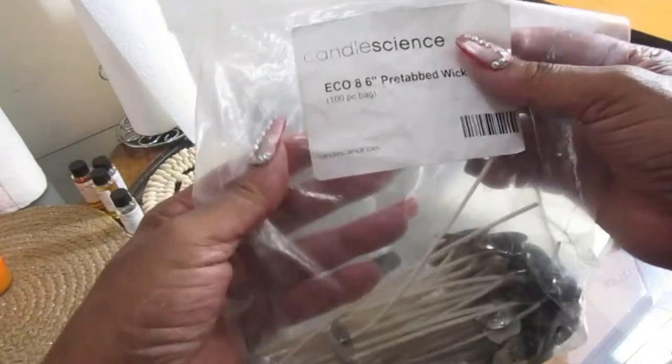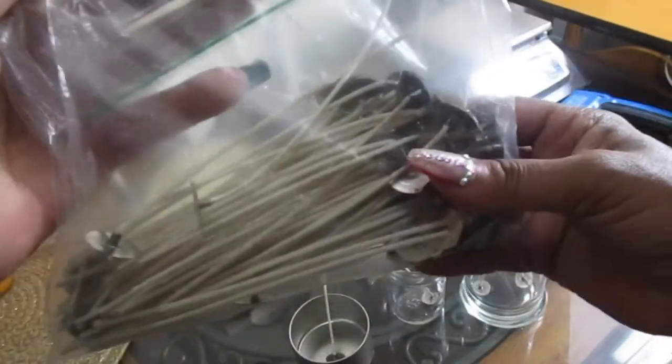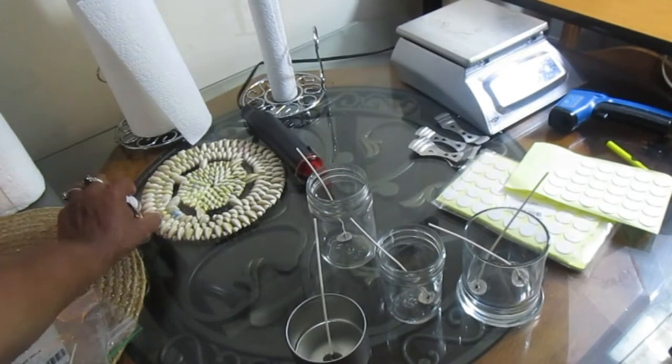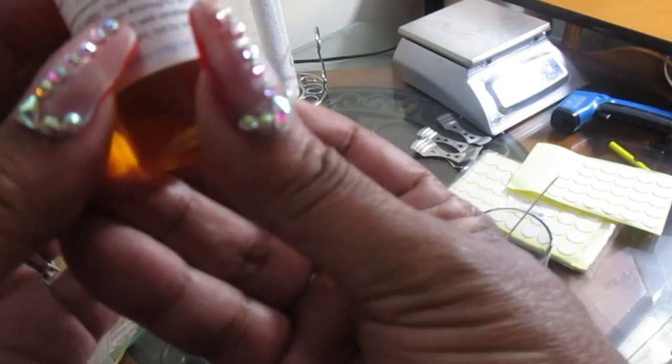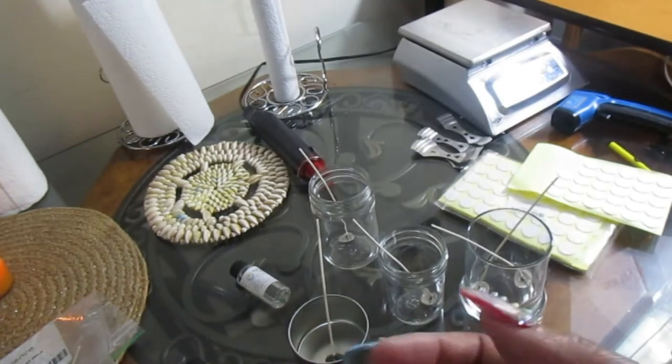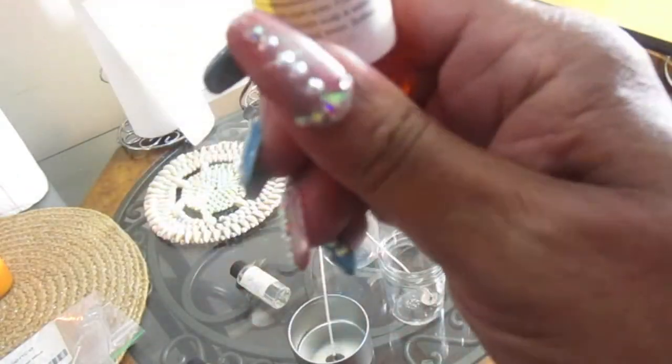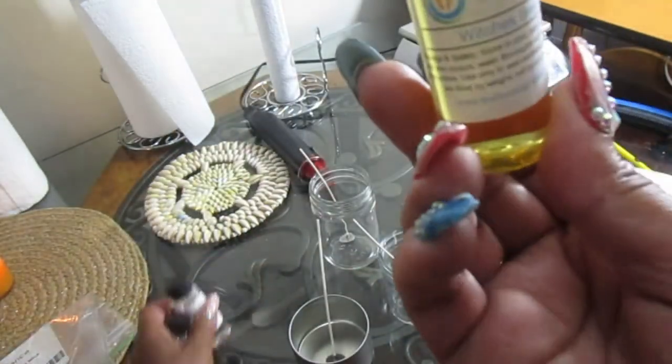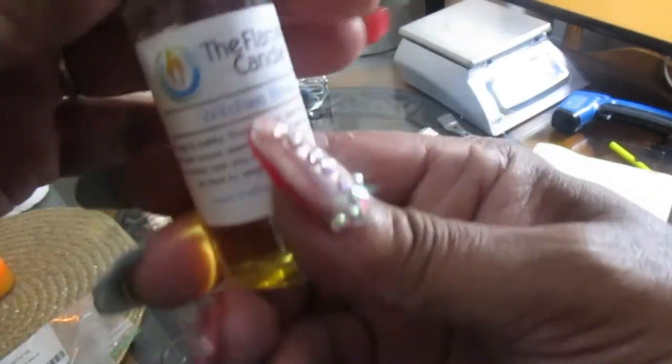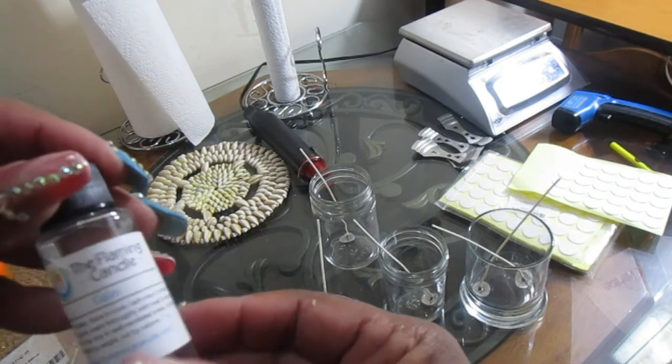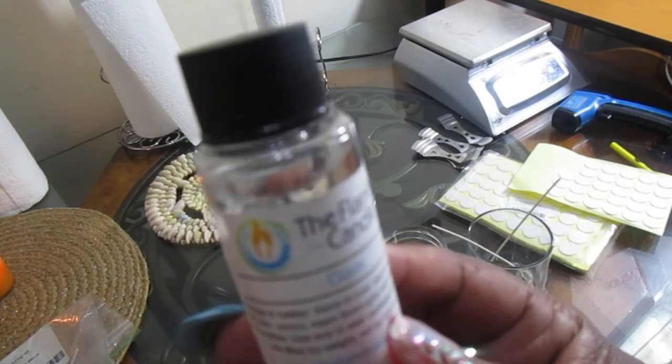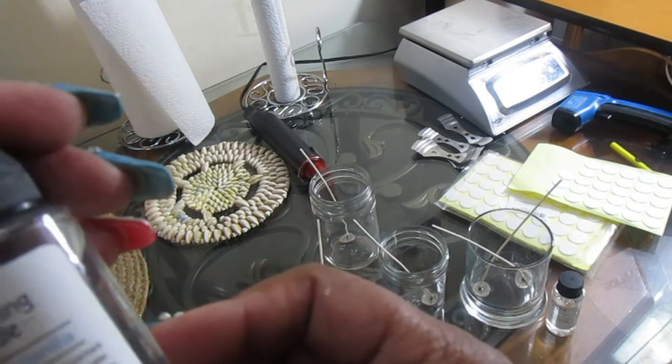I am using eco-free wicks from Candle Science, and these are my new fragrance samples that I bought from Flaming Candle. This one is called Amber and Oud, it smells delicious. This was a free sample, it's called Witches Brew. This one is called Gain, you know like Gain the fabric softener. And this one is called Black Raspberry Vanilla.